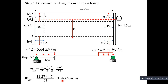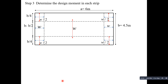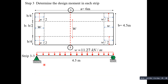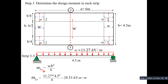Next, we take a section on strip 3-3, a vertical strip. The full load w = 11.27 kN/m acts over the full 4.5 m width beam in the y-direction. The moment M3y = wb²/8, giving a moment of 28.53 kN·m/m.